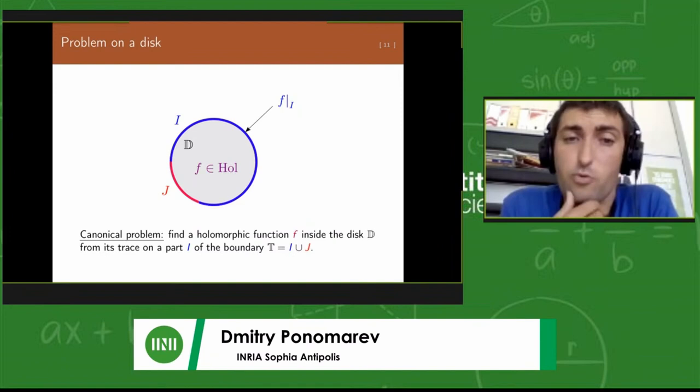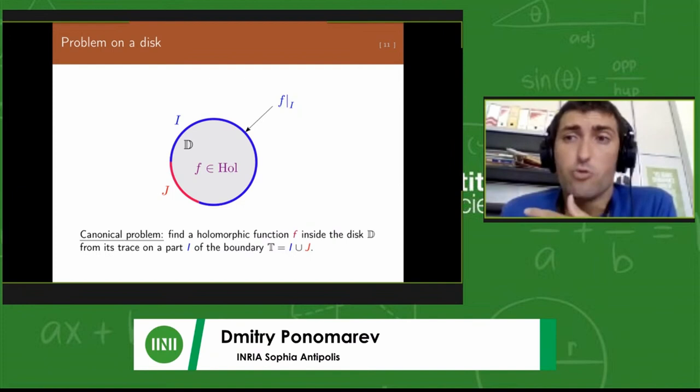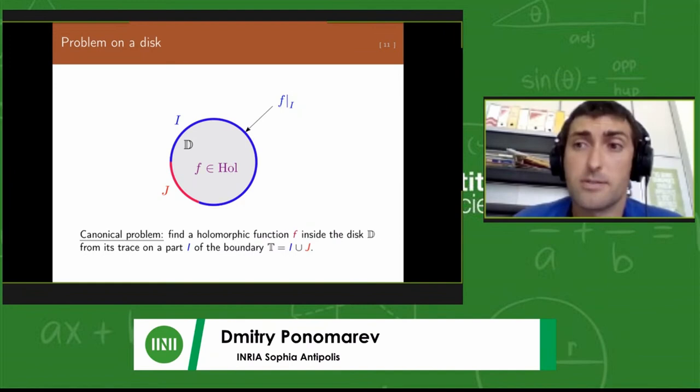In this simplest setting, we have a holomorphic function on the disk, and we want to reconstruct it from its values only on part of the boundary, this blue part i of the boundary. Of course, if we had data on the whole boundary, this would just be the Cauchy formula.